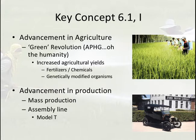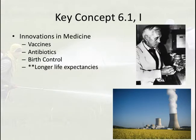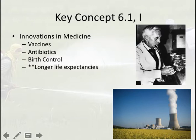You also see advancements in production, epitomized by Henry Ford's mass production — especially implementing the assembly line on the Model T. This is a new organizational form that really destroys worker autonomy; you just become a cog in the machine. There are also innovations in medicine: the universalization of vaccines, antibiotics — epitomized by Alexander Fleming's discovery of penicillin — and birth control. All of these innovations lead to longer life expectancies, because if we can rid the body of harmful bacteria and pathogens, people can live longer.